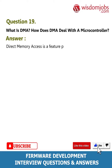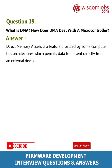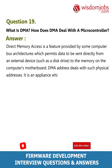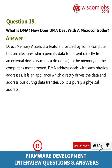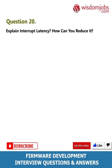Question 19: What is DMA? How does DMA deal with a microcontroller? Answer: Direct Memory Access is a feature provided by some computer bus architectures which permits data to be sent directly from an external device, such as a disk drive, to the memory on the computer's motherboard. DMA addresses deal with physical addresses; it is an appliance which directly drives the data and address bus during data transfer, so it is purely a physical address.